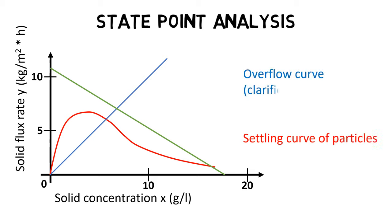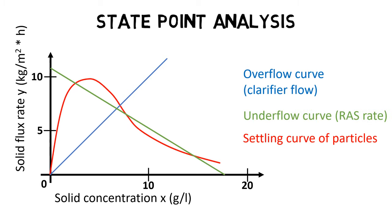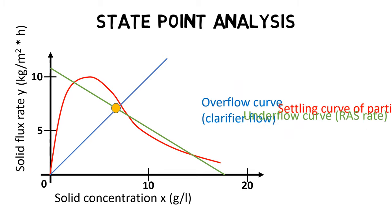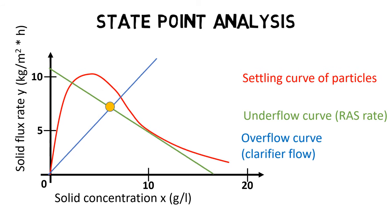the overflow curve to represent the flow through the clarifier, and the underflow curve to represent the RAS rate in the clarifier. The goal is to have the intersection of the overflow and underflow curve underneath the settling curve to allow enough time for solid settling.